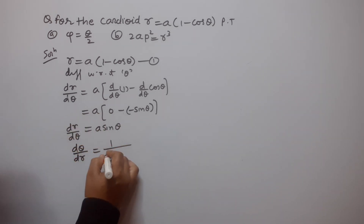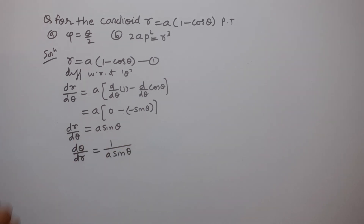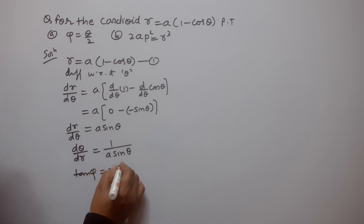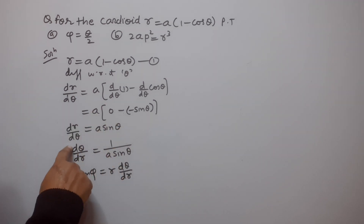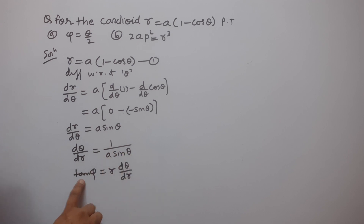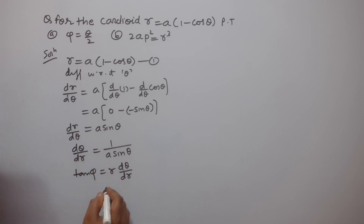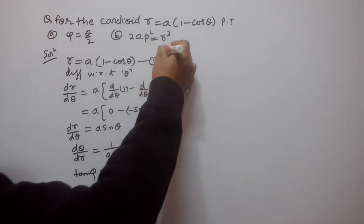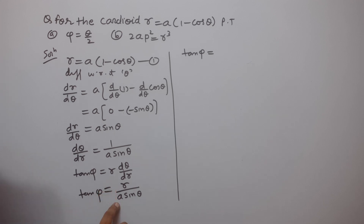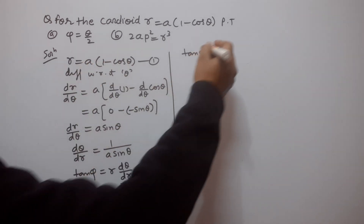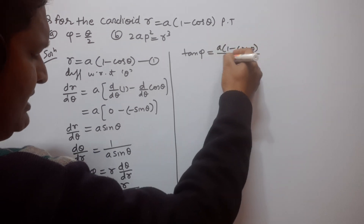Therefore dθ/dr is equal to 1/(a·sin θ). Now we know that tan φ is equal to r·dθ/dr. Substituting the value of dθ/dr, we get tan φ equal to r/(a·sin θ). Now we substitute the value of r from the given equation: r = a(1 minus cos θ), so tan φ equals a(1 minus cos θ) divided by a·sin θ.